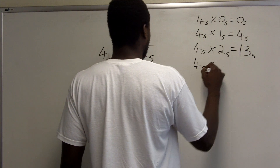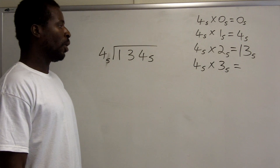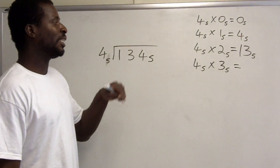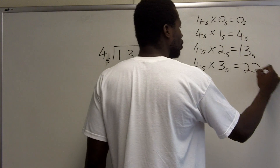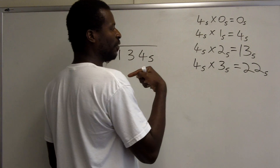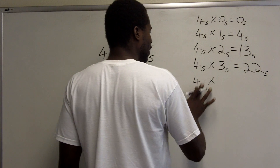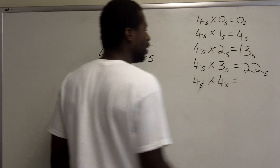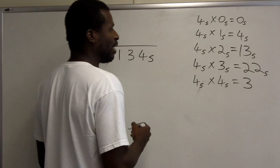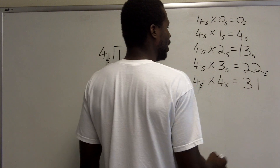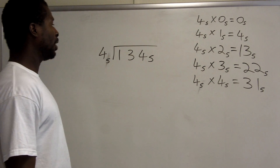4 base 5 times 3 base 5: if we do this in base 10 we get 12. We have to convert 12 to base 5. There are two groups of 5 in 12 with a remainder of 2, so 12 base 10 is actually 22 base 5. And 4 base 5 times 4 base 5: 4 times 4 in base 10 is 16. There are three groups of 5 in 16 and one is the remainder, so 16 base 10 is actually 31 base 5.